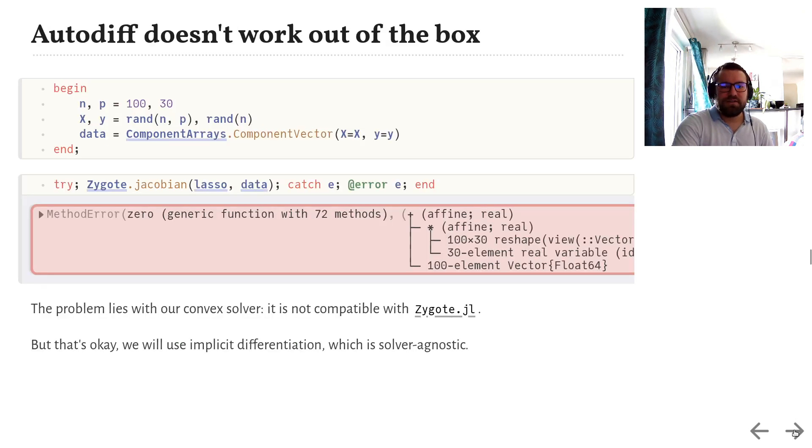Unfortunately, automatic differentiation doesn't work out of the box when you do things that way. If we try to compute, say, the Jacobian of the lasso with respect to the data using Zygote, it doesn't work. It throws an error. And that could be expected. I mean, our convex solver is not necessarily meant to be compatible with Zygote or with automatic differentiation in general.